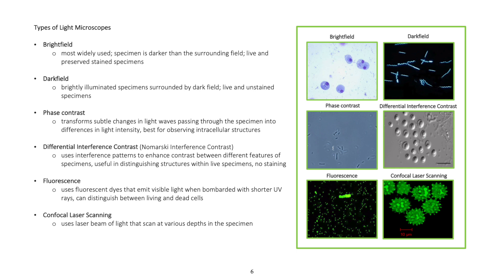Fluorescence microscopy uses fluorescent dyes that emit visible light when bombarded with shorter UV rays. It can distinguish between living and dead cells.